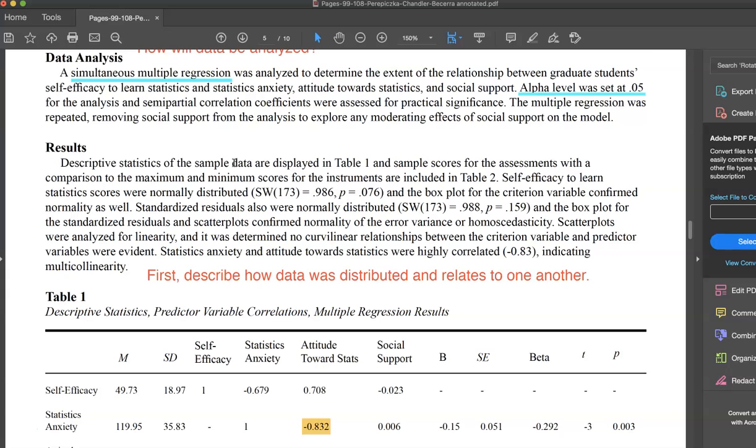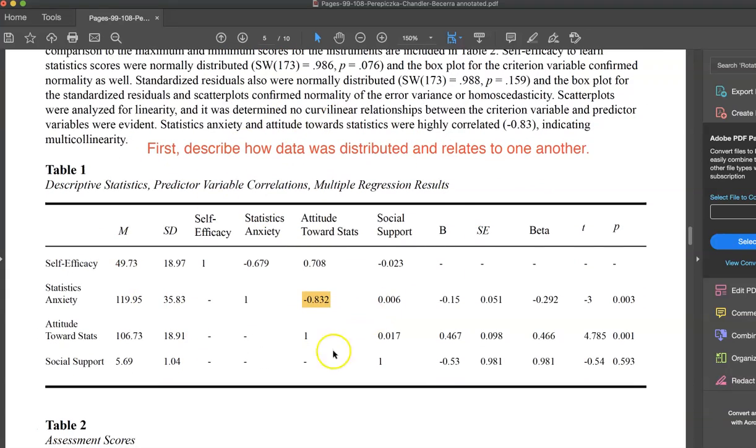Then they looked at their results. And when you're doing regression results, one of the first things you have to do is determine if there's any multi-collinearity. And in this particular one that I have highlighted, these two variables, attitudes towards stats and stats anxiety, have a very high correlation. Even though it's a negative correlation, it is a high correlation, which is not surprising.